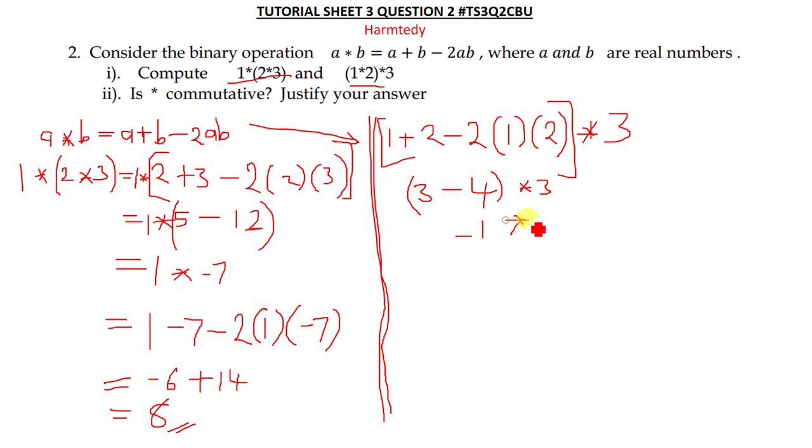From there we now plug in the values. Where there is a we put -1, where there's b we put 3. So: -1 + 3 - 2(-1)(3). Simplifying this expression, we get 2, then minus negative two times -1 gives us plus, and 2 times 3 = 6. We're still getting 8 as our answer.